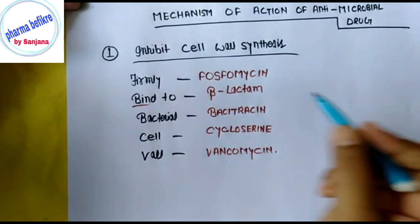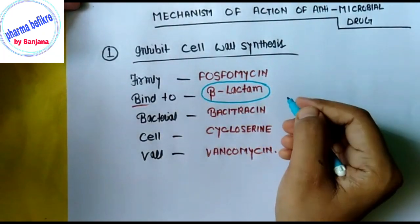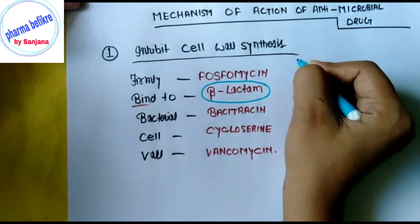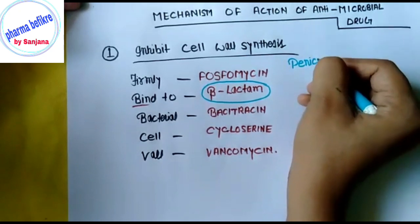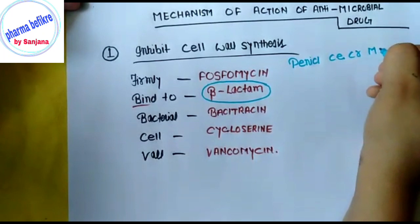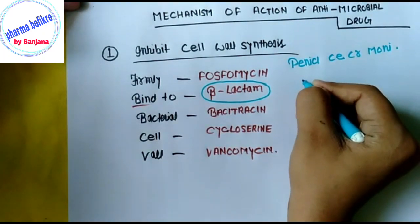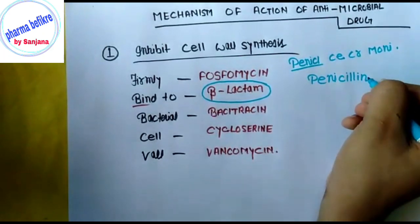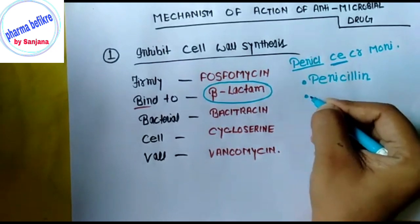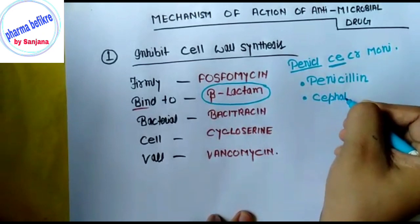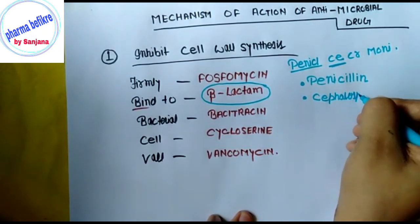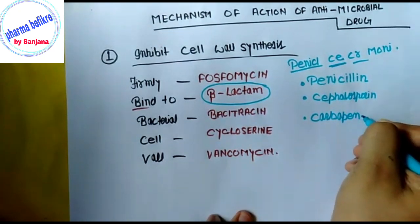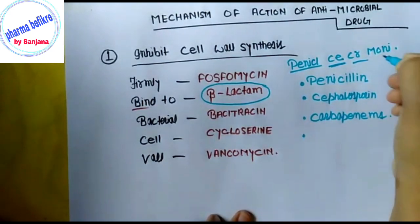In the Beta-lactam group, there are four drugs. We can remember them using the mnemonic 'Pencil se kar moni': Penicillin, Cephalosporin, Carbapenem, and Monobactam.